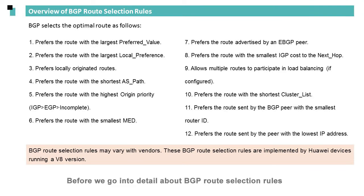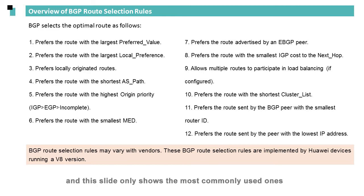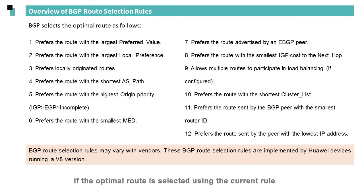Before we go into detail about BGP route selection rules, we need to know the following points. First, BGP route selection rules may vary slightly with vendors. Second, there are many specific BGP route selection rules, and this slide only shows the most commonly used ones. Third, the rules are listed in descending order. If the optimal route is selected using the current rule, the router does not proceed to the next rule.